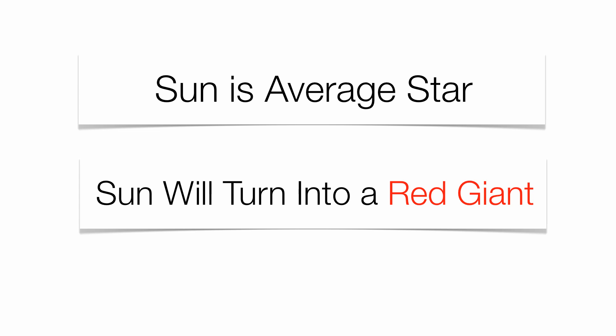So when the sun does turn into a red giant, the four inner planets, Mercury, Venus, Earth, and Mars, will be swallowed up by that red giant.